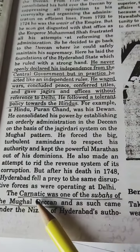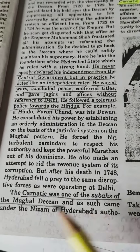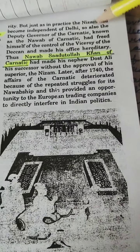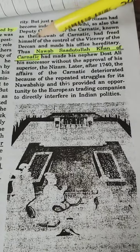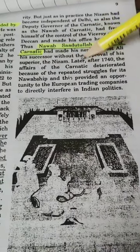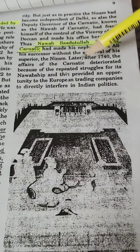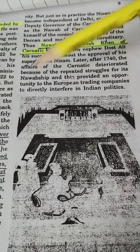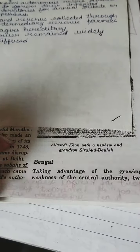Carnatic was one of the subas of the Mughal Deccan and came under the Nizam of Hyderabad's authority. But just as the Nizam had become independent of Delhi in practice, the Nawab of Carnatic, Saadutulla Khan, made his nephew Dost Ali his successor without approval of the Nizam. After 1740, affairs of the Carnatic deteriorated due to struggles for its Nawabship. This will lead us to the Carnatic Wars and the Anglo-Maratha wars, covered in the next video.